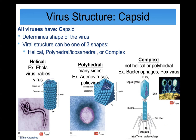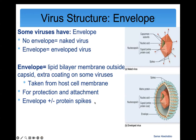Some viruses have an envelope, not all. The envelope comes from the host cell membrane, is a lipid bilayer, and provides an extra layer of protection. Viruses with an envelope are called enveloped viruses; without one, they're called naked viruses. The envelope looks like the cell membrane of human cells, sits outside the capsid, and also helps the virus attach to host cells. It may or may not have spikes.